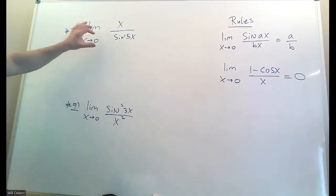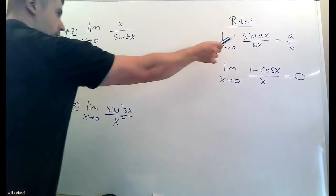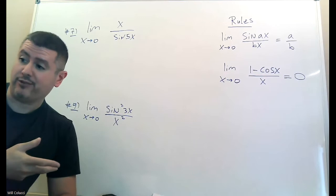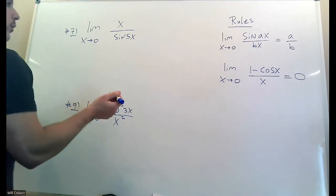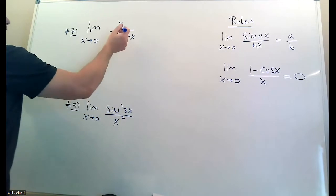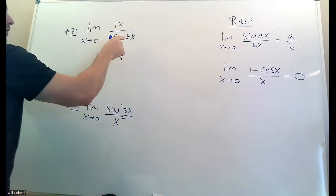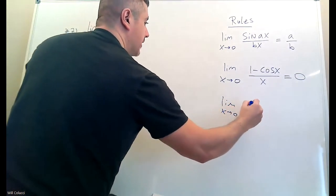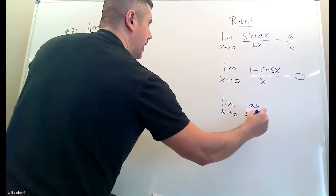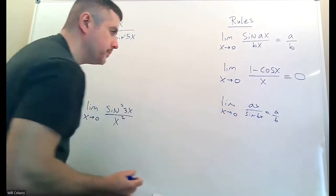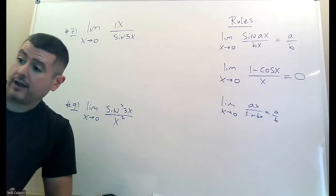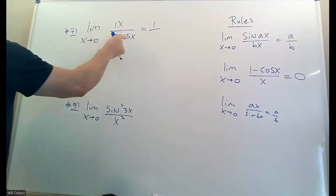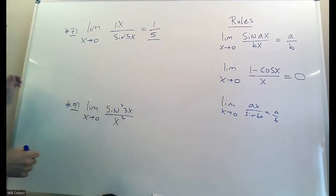This one looks a lot like the rule but it's upside down and flipped. The question is: would it still work? It does work. You can still just take the numbers in front. If you have a·x over sine(b·x), you can take a over b whether it's flipped or not. Just take the number in front of x on top and the number in front of x on the bottom.